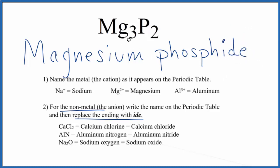So the name for Mg3P2 is magnesium phosphide. If we wanted to write the formula, we need to realize that magnesium,